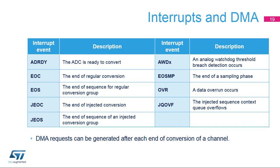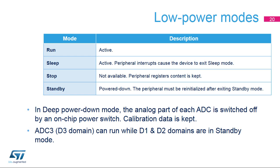DMA requests can be generated at each end of conversion when the ADC output data is ready. The ADCs are active in run and sleep modes. In stop mode, the ADCs are not available but the contents of their registers are kept. In standby mode, the ADCs are powered down and must be reinitialized when returning to a higher power state. There is a deep power-down mode in each ADC itself, which reduces leakage by turning off an on-chip power switch — this is the recommended mode whenever an ADC is not used.